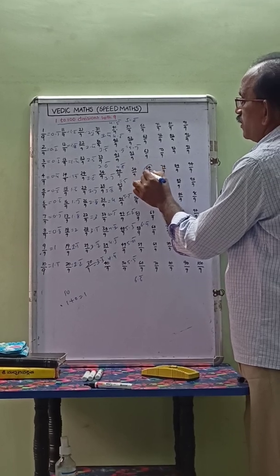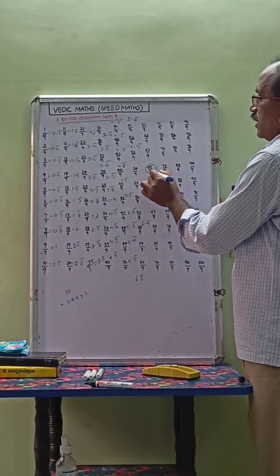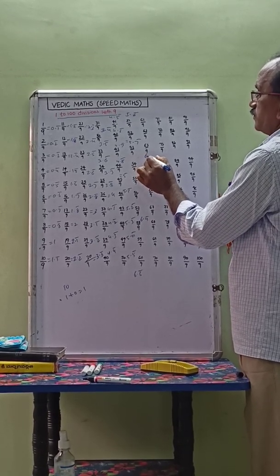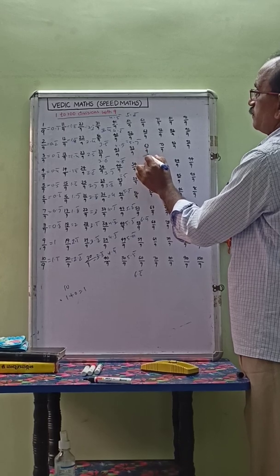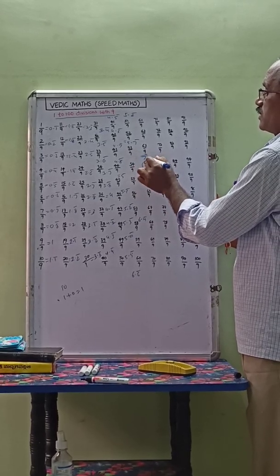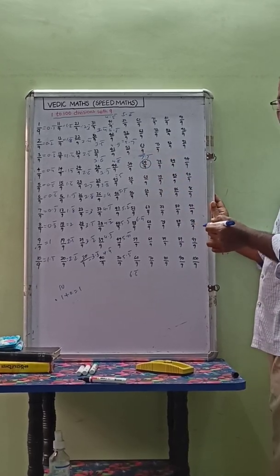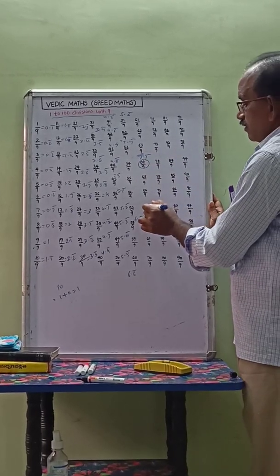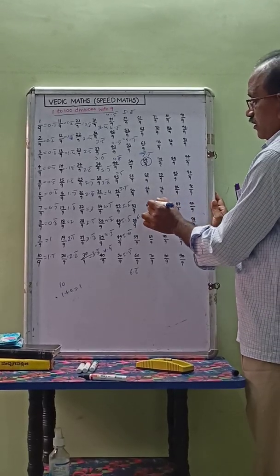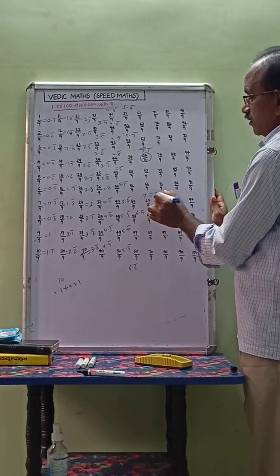64 by 9: sum of the digits equals 10, digit sum — 1 plus 0 equals 1, so 7.1 bar. 67 by 9: sum of the digits equals 13, digital sum — 1 plus 3 equals 4 bar, so 7.4 bar.